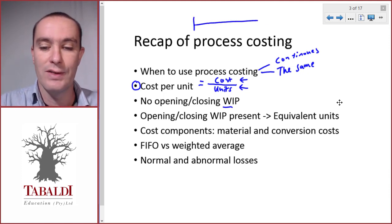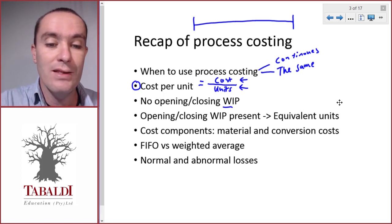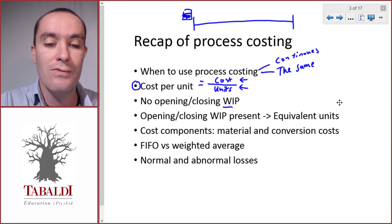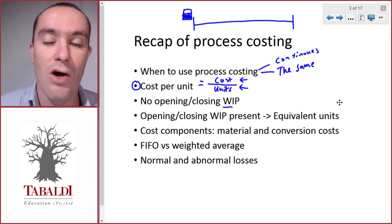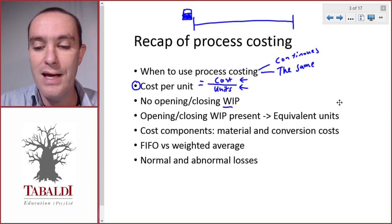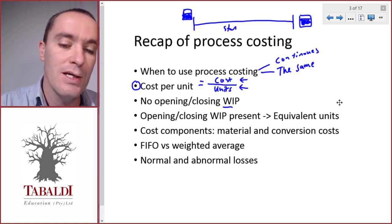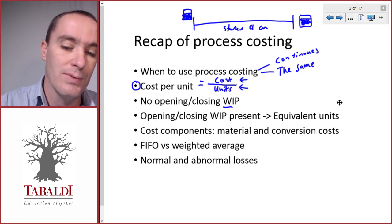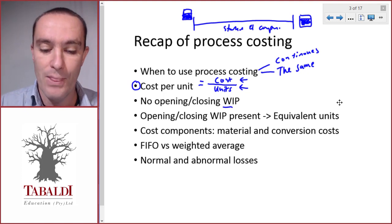The problem comes in if we have opening or closing work in process. If you think of a timeline for the period we are costing: at the start of the process we may have incomplete products — say only half completed — and at the end of the period we may have started some products but not finished them yet. But there would also be units that we started and completed during this period, which makes things a bit more complicated.